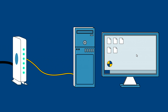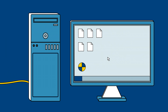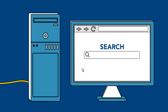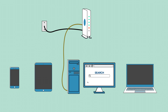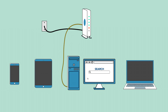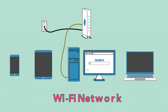Once you have everything set up, you can open your web browser and begin using the internet. If you want to connect several devices to the internet, you can create a wireless home network, also known as a Wi-Fi network.